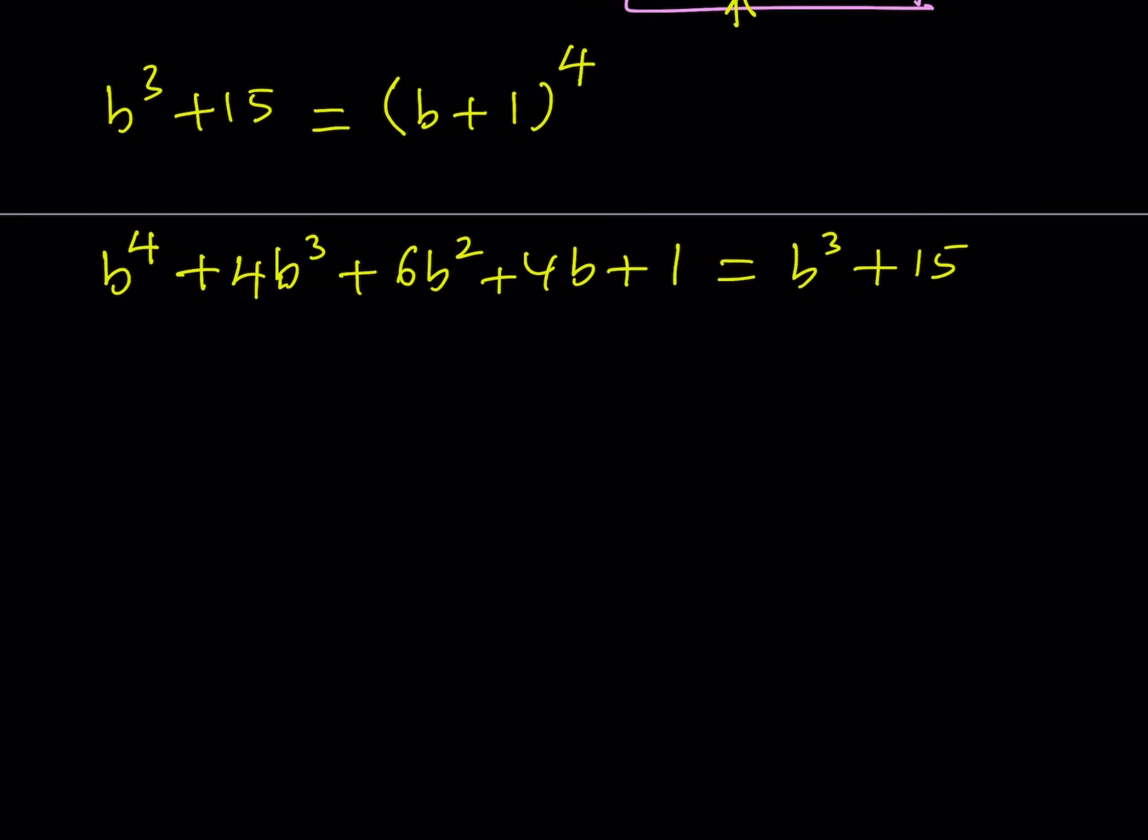Now, I want to write this in standard form. Let's go ahead and put everything on the left-hand side so that we get B to the 4th power. Now, 4B cubed minus B cubed is going to be 3B cubed plus 6B squared plus 4B. 1 minus 15 is negative 14.